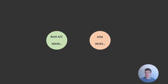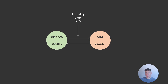So in our scenario, let's say we have our two grains — our bank account grain and our ATM grain. As usual, the bank account calls the ATM to do some work, it waits for the response, and the ATM returns that. The first place where we can add a grain filter, or an incoming grain filter, is on the request from the bank account to the ATM. We can also add a grain filter during the response phase, so an outgoing grain filter.